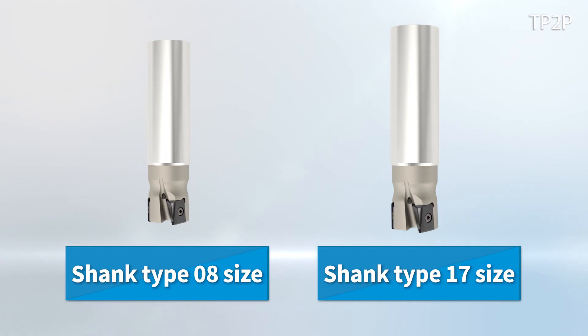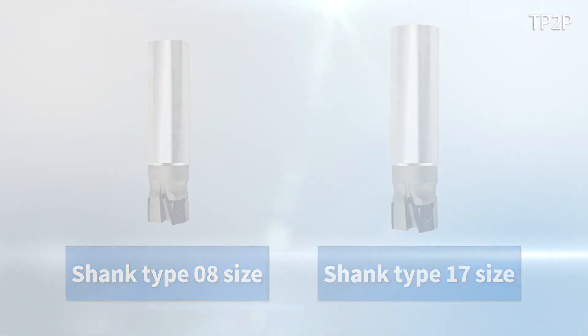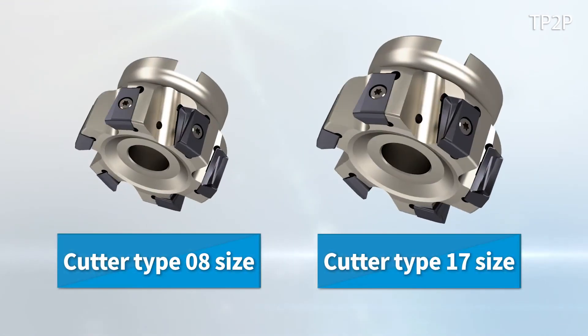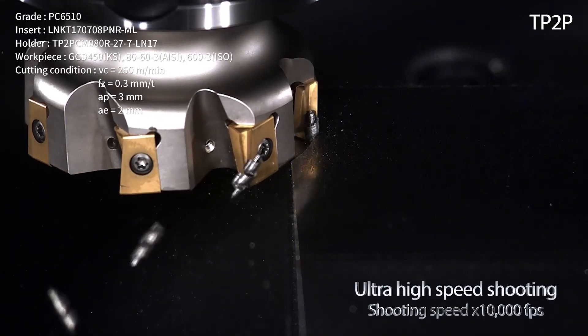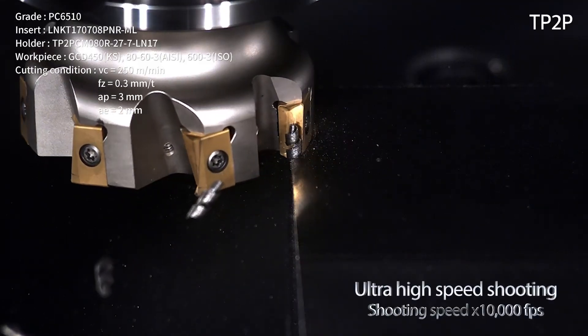It has two lineups of the shank and cutter type, each with 0.8 and 17 sizes. It can be applied to diverse types of machining.